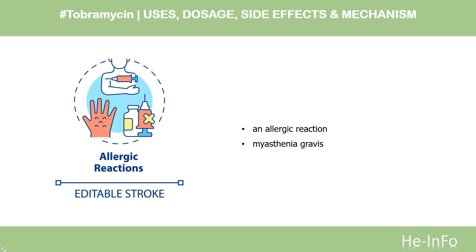Contraindications: Tobramycin is contraindicated in people with hypersensitivity against aminoglycoside antibiotics. The infusion is also contraindicated in people with myasthenia gravis.